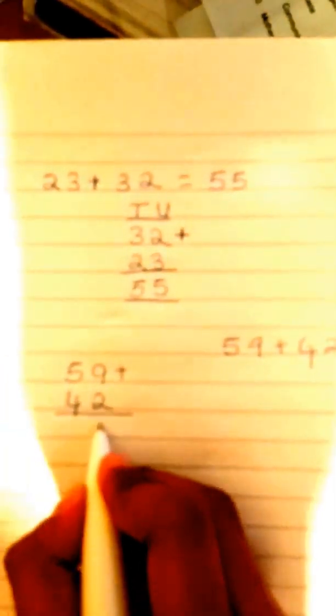But for this one, you have 9 plus 2. We all know what 9 plus 2 is. It's 11. So, now you have 11. But what do we need to do? We can't just write 11 down. So, you put one here and the other one on top of the 5.